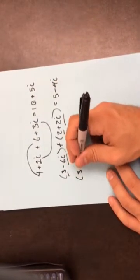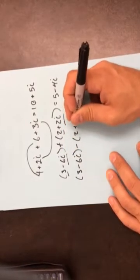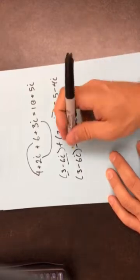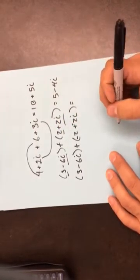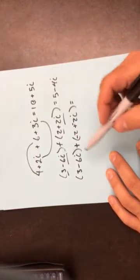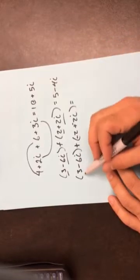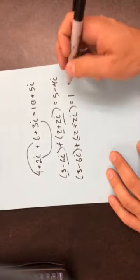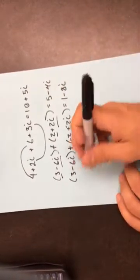Now when it's subtraction, it's a little bit different. What I'm going to do when it's subtraction is change this to a plus and change the sign of everything on the inside. Now since it's plus, the parentheses don't matter. Essentially what I did is distribute the negative sign. So this becomes 3 minus 2 is 1, and negative 6 plus negative 2 is negative 8i.